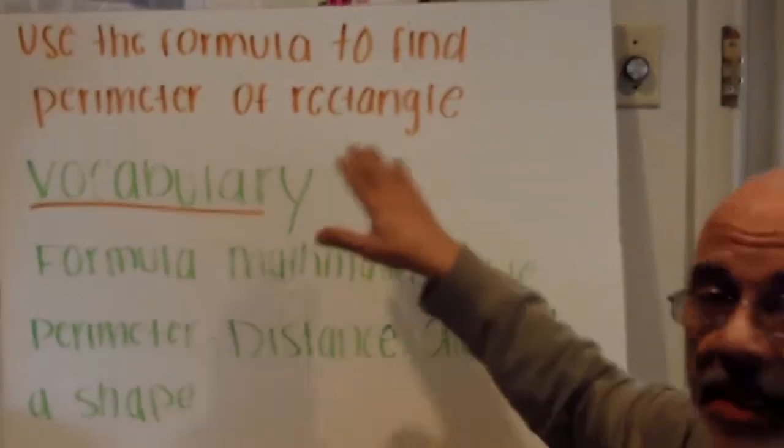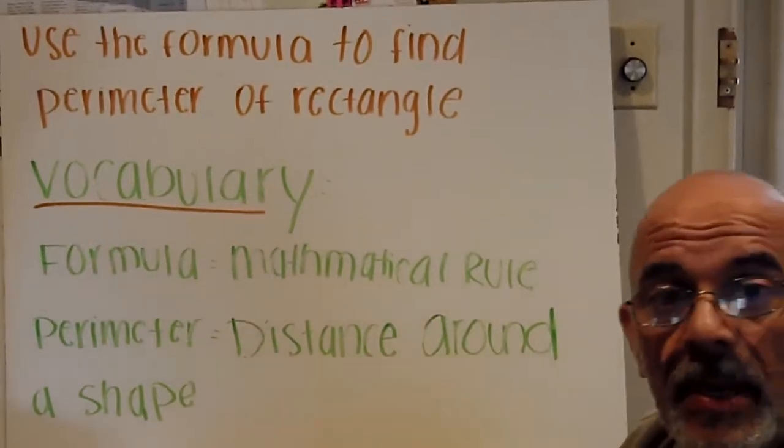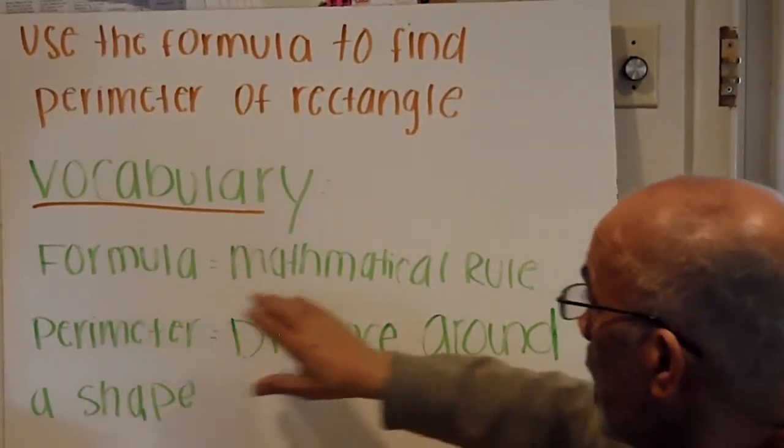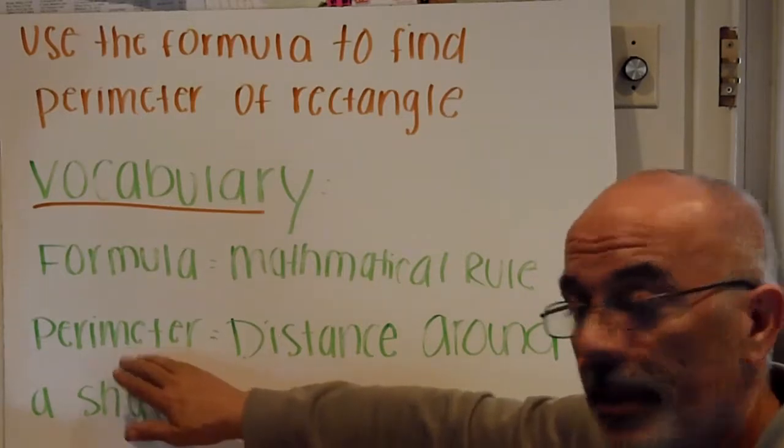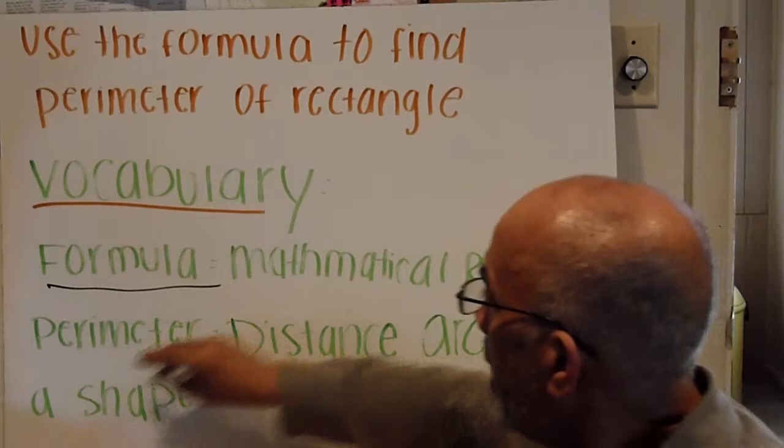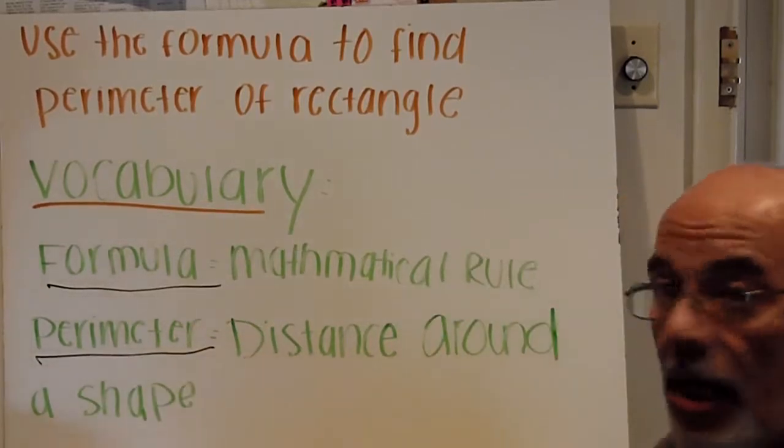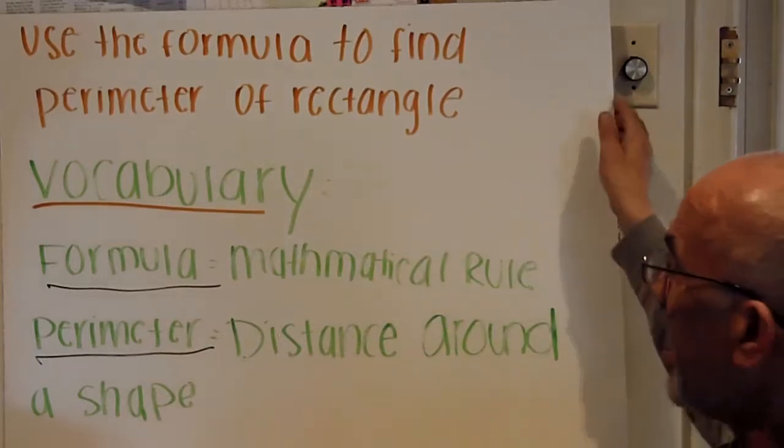I'm going to use a formula to find the perimeter of a rectangle. Some vocabulary that I want you to know: formula, which is a mathematical rule; perimeter, which is the distance around a shape. It could be any shape, today it will be rectangles.